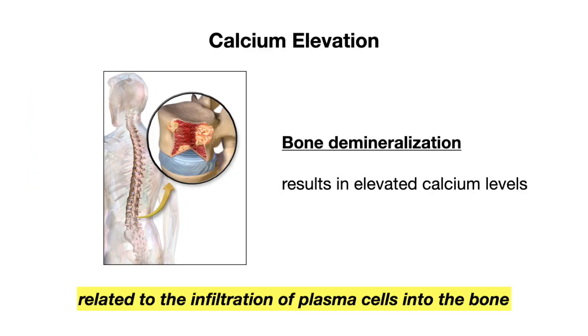Starting with calcium elevation — this is a result of bone demineralization. The immunoglobulins produced by the plasma cells infiltrate the bone, causing calcium levels to be increased.